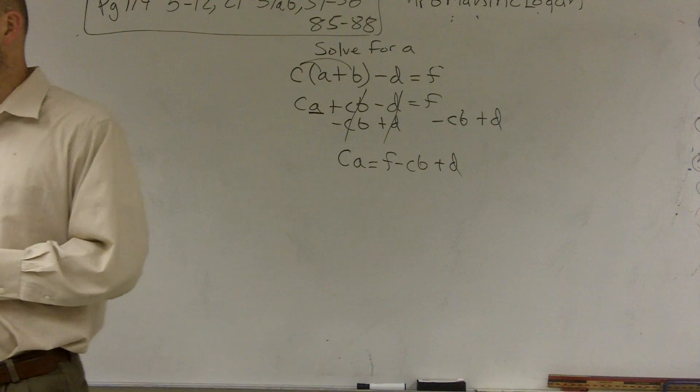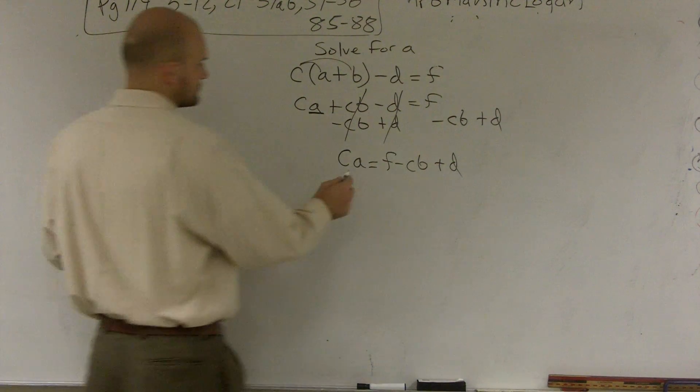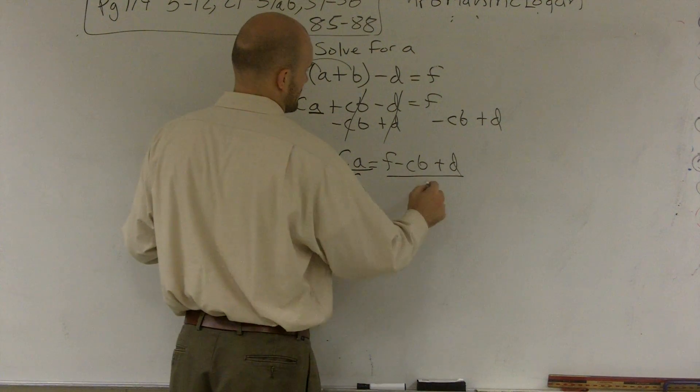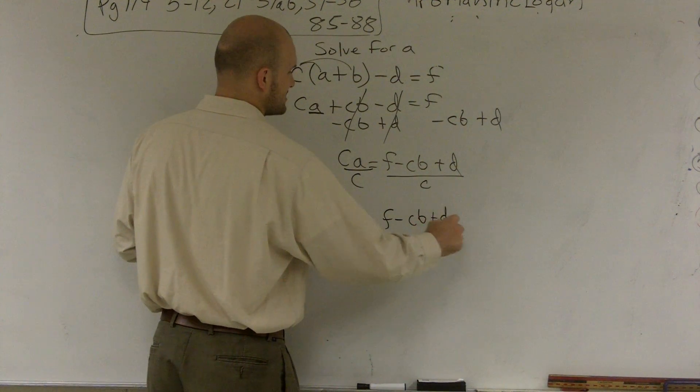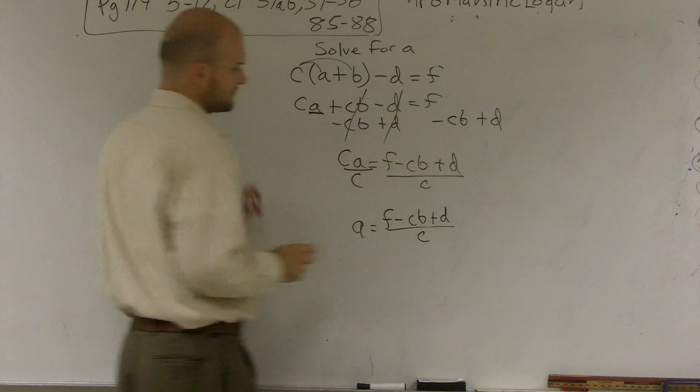Then I can undo my multiplication of C, and I'll be left with A equals F minus CB plus D, all over C.